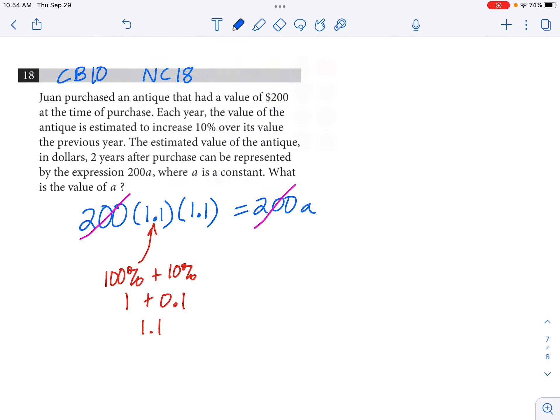Now by the way, some people might have written this as 200 times 1.1 squared equals 200a, and that's equivalent. 1.1 times 1.1 or 1.1 squared, that's the number that we're after.